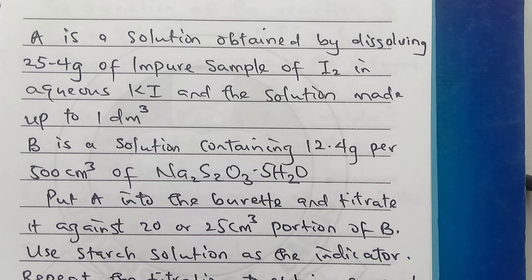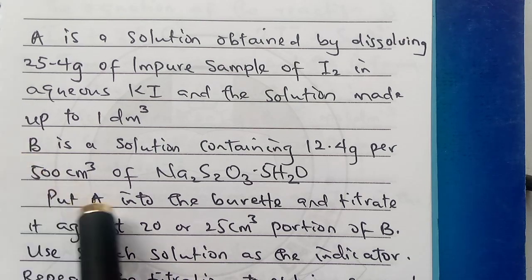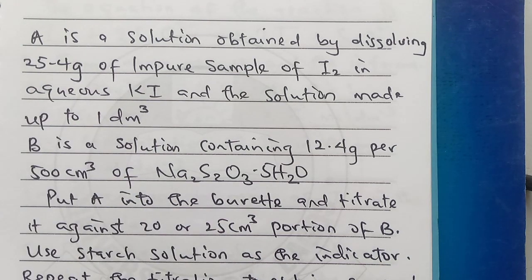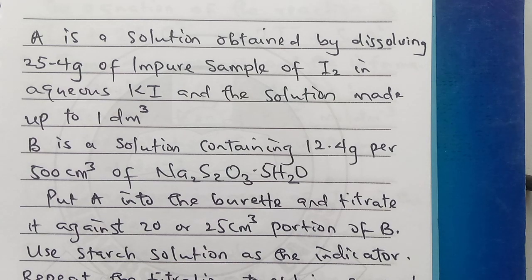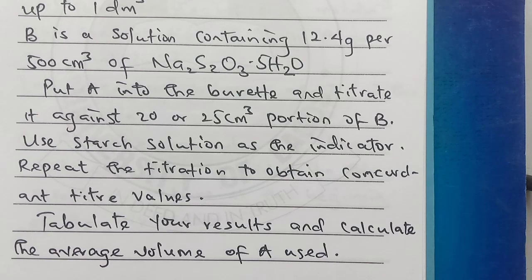Use starch solution as the indicator. Repeat the titration to obtain concordant titre values, tabulate your results, and calculate the average volume of A used. Mind you, some speculations are coming up - it's possible that they may ask us to use B in the position of A, and I'm going to tell you what the value will be, but I still believe they won't.